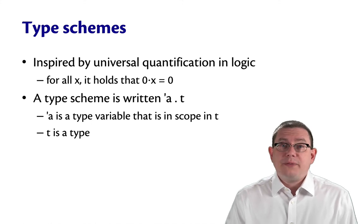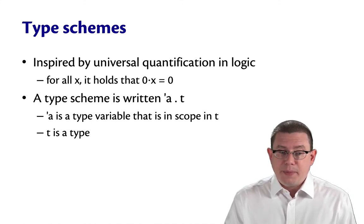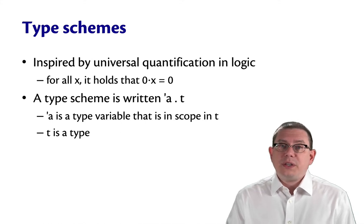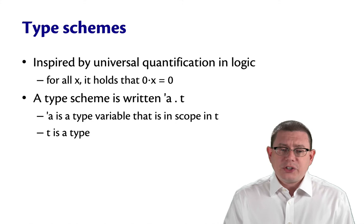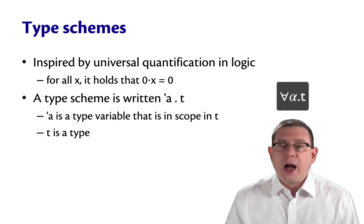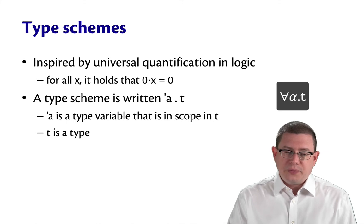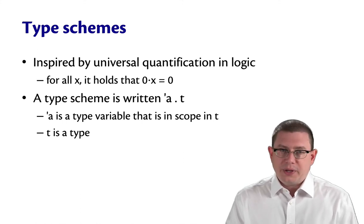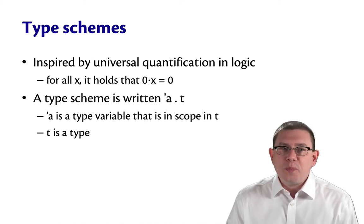In type inference, we'll have the same thing. We'll have something called a type scheme. Now this is going to be written alpha dot t. And now in textbooks, you might actually see this written as for all alpha dot t using the for all quantifier from mathematical logic. I'm going to omit writing for all here, but you can think of it. So alpha here is going to be a type variable that is in scope in that type t.